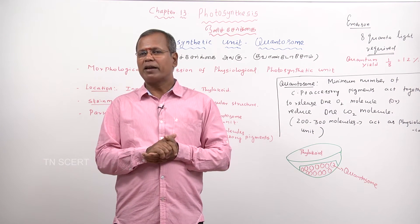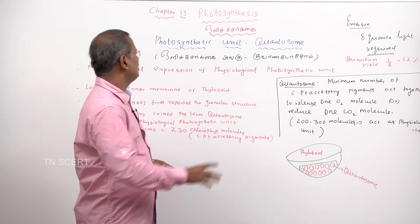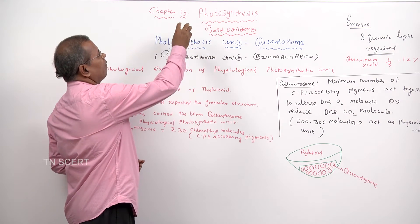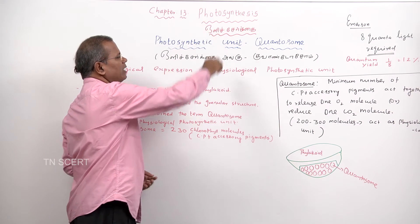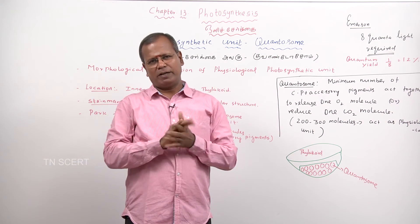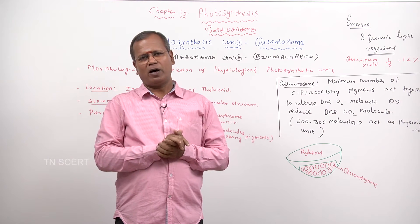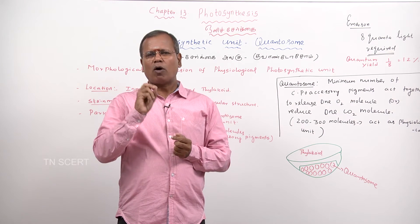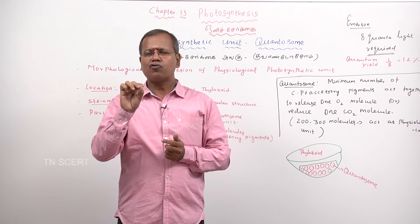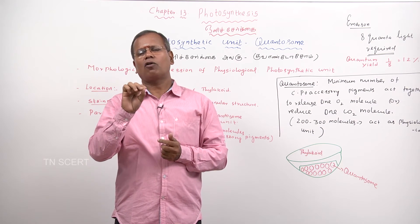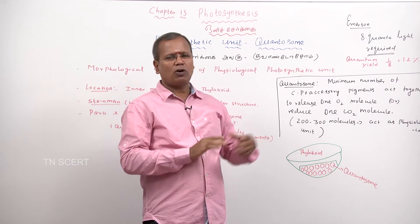The photosynthetic unit — quantosome — plays a major role. According to the scientist Emerson, each quantosome is composed of 200 to 300 chlorophyll plus accessory molecules.